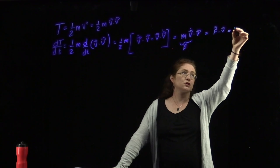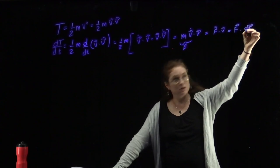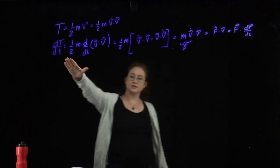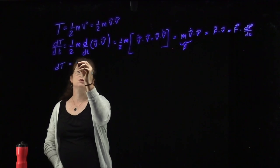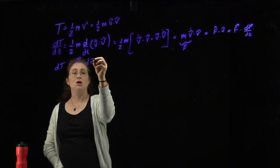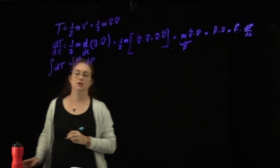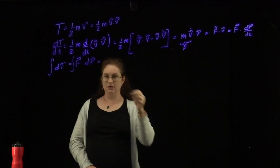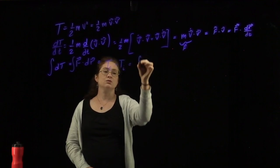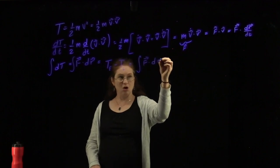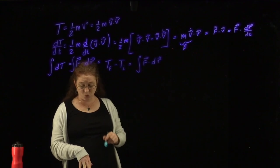We can further write the force dotted with dr/dt. Since we have dt on both sides, we can multiply through by dt and get dT equals F dot dr. Integrating both sides, we get the change in kinetic energy — final kinetic energy minus initial kinetic energy — equals the integral of F dot dr. The change in the particle's kinetic energy between two points on its path equals the work done by the net force as it moves between those two points.